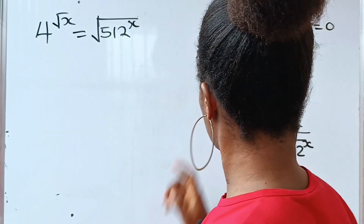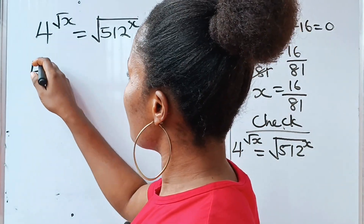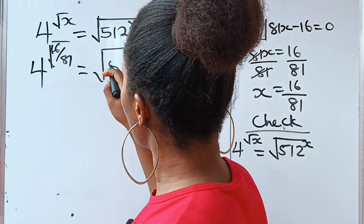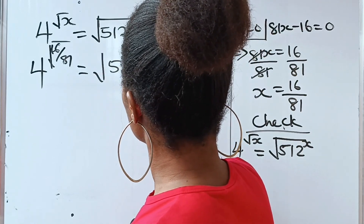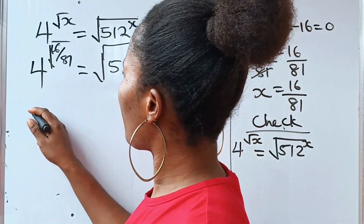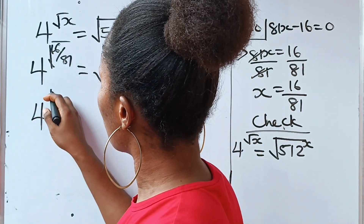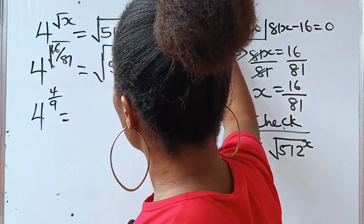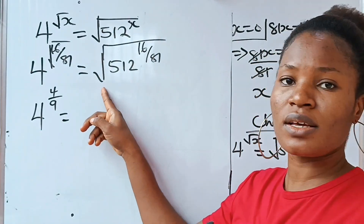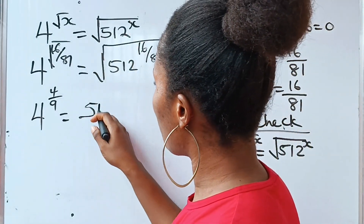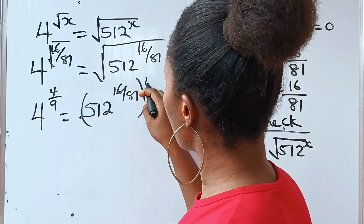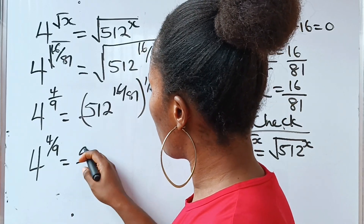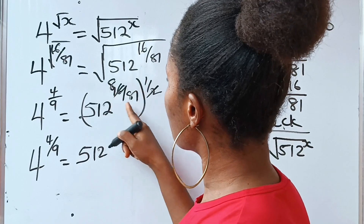Now the main one is x equals 16 over 81. Let's see how that works. We have 4 raised to the power of the square root of 16 over 81, which equals the square root of 512 raised to the power of 16 over 81. The square root of 16 is 4 and the square root of 81 is 9, so we get 4 to the power of 4 over 9. For the right side, taking the square root as a power of half, we get 512 raised to the power of 16 over 81, everything raised to the power of half, giving 8 over 81.